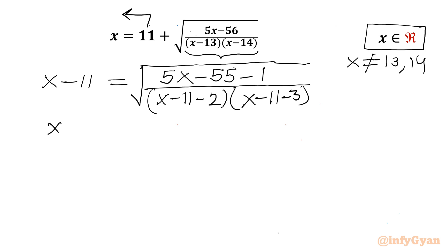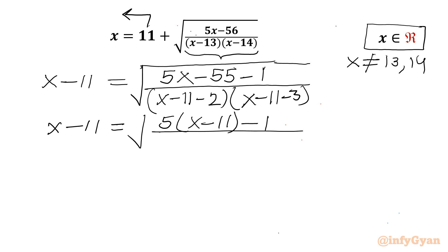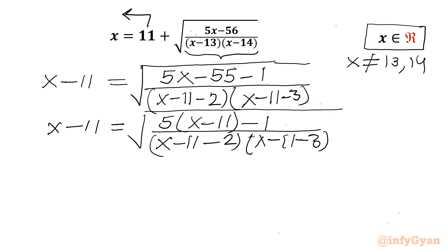Now I can write the equation as x minus 11 equal to square root of (5 times (x minus 11) minus 1) over ((x minus 11 minus 2)(x minus 11 minus 3)). You can see x minus 11 appearing everywhere, so we can replace x minus 11 with y.